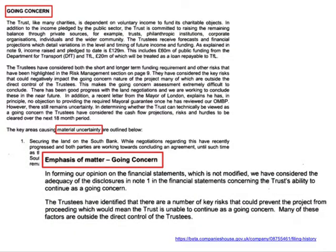This is what this might look like in some company accounts. You can see the heading 'going concern,' you can see 'emphasis of matter going concern,' and the phrase 'material uncertainty' highlighted there. These are the sorts of things to look for. And this is how it looked in the Garden Bridge Trust accounts as well. You can see the issues being raised — for example, they hadn't actually secured certain sites, certain land.